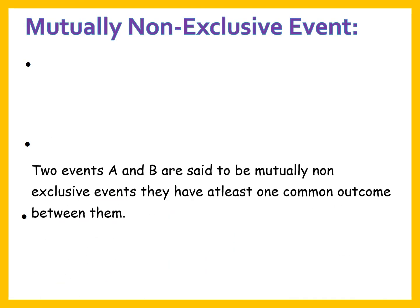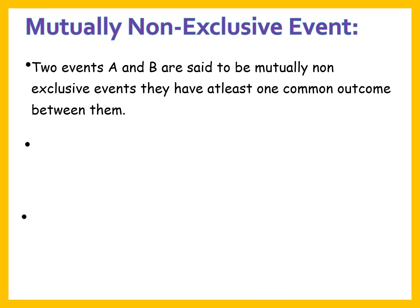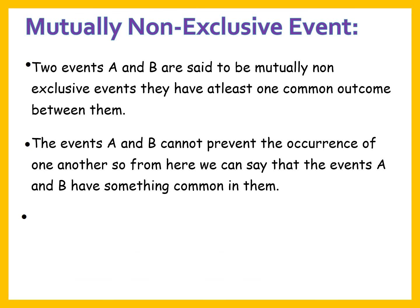Now, mutually non-exclusive events — the second aspect where the probability rule of addition is applicable. Two events A and B are said to be mutually non-exclusive when they have at least one common outcome between them. The events A and B cannot prevent the occurrence of one another, meaning A and B can happen together.